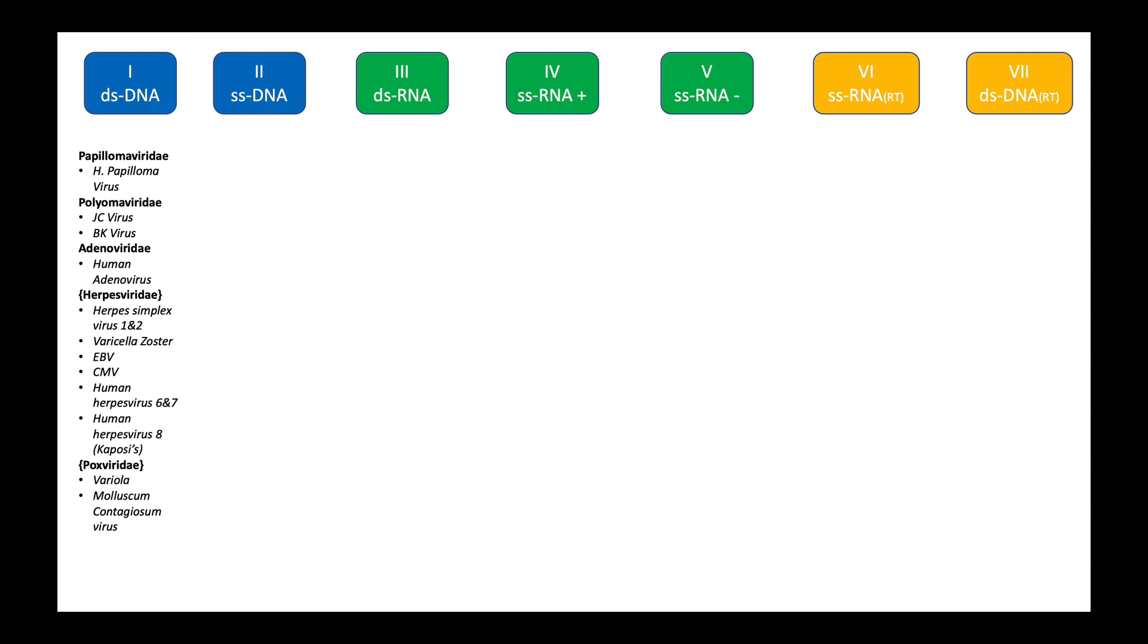Class one, which we saw includes Papillomaviridae, Polyomaviridae, Adenoviridae families, the Herpesviridae family and Poxviridae family. In this group, Herpesviridae is a very important group, commonly pathogenic to humans. In class two, we just have parvovirus B19 which is significant. Class three has rotavirus which commonly involves children.